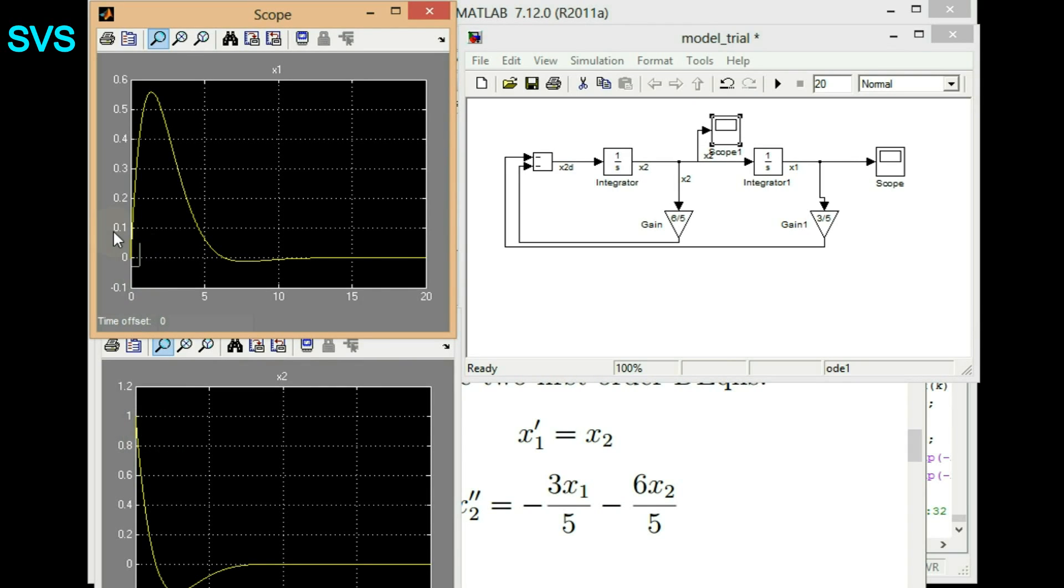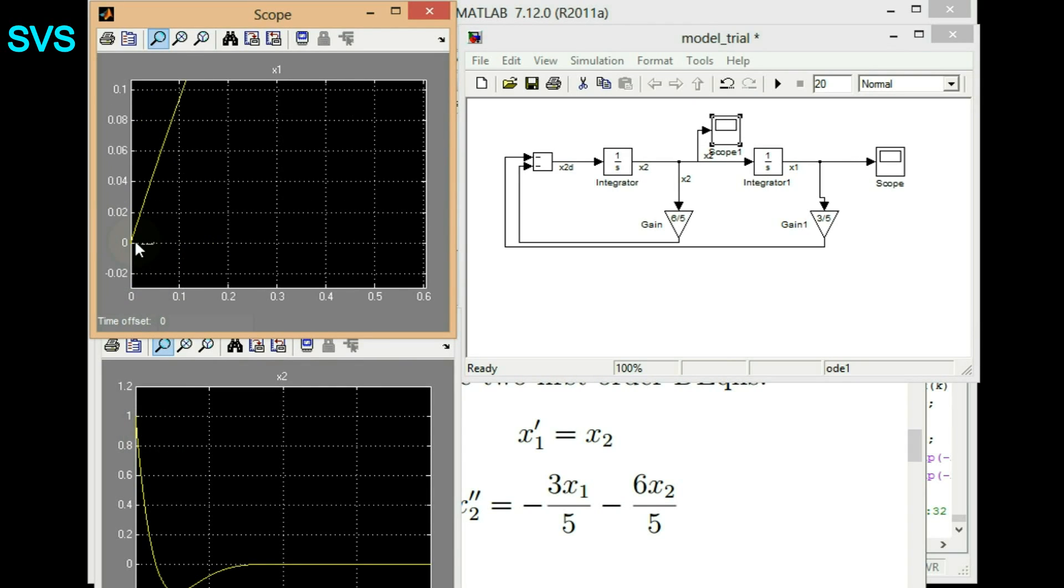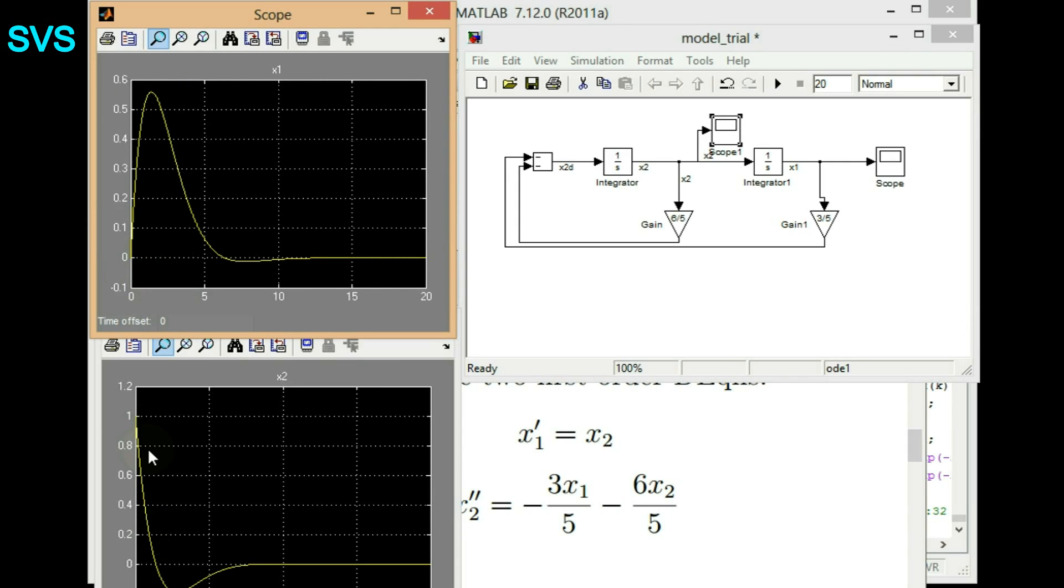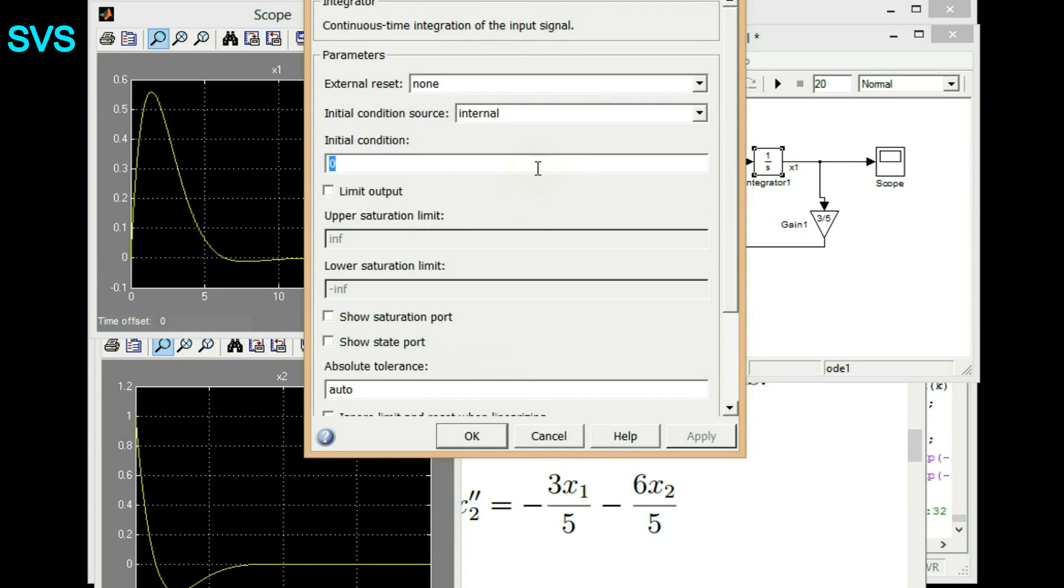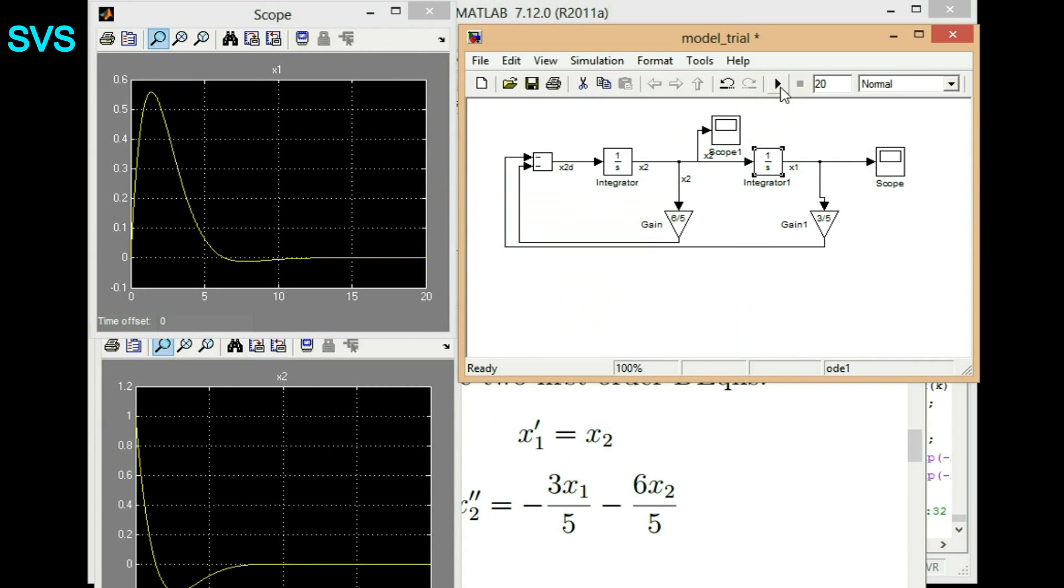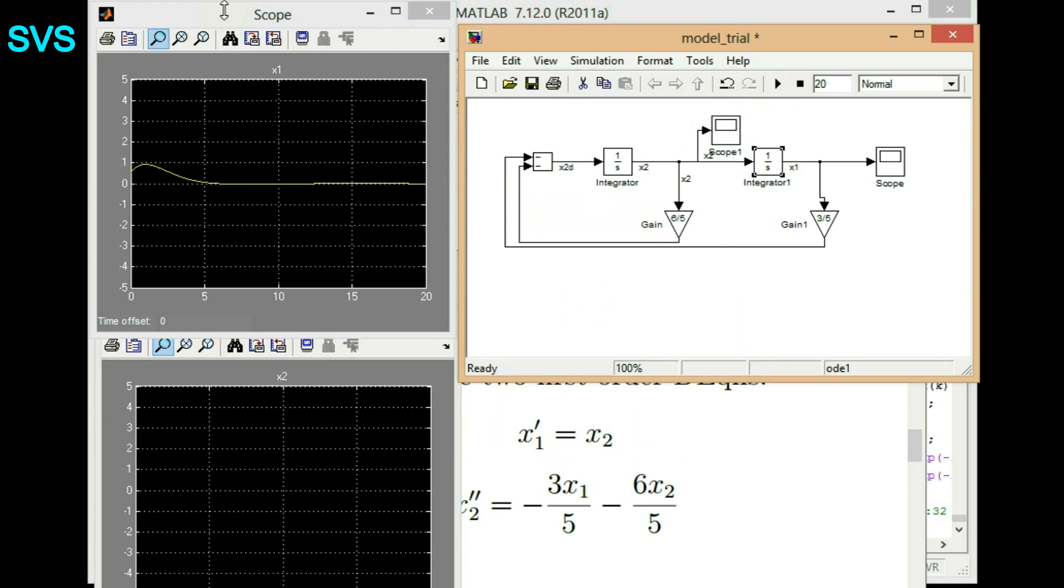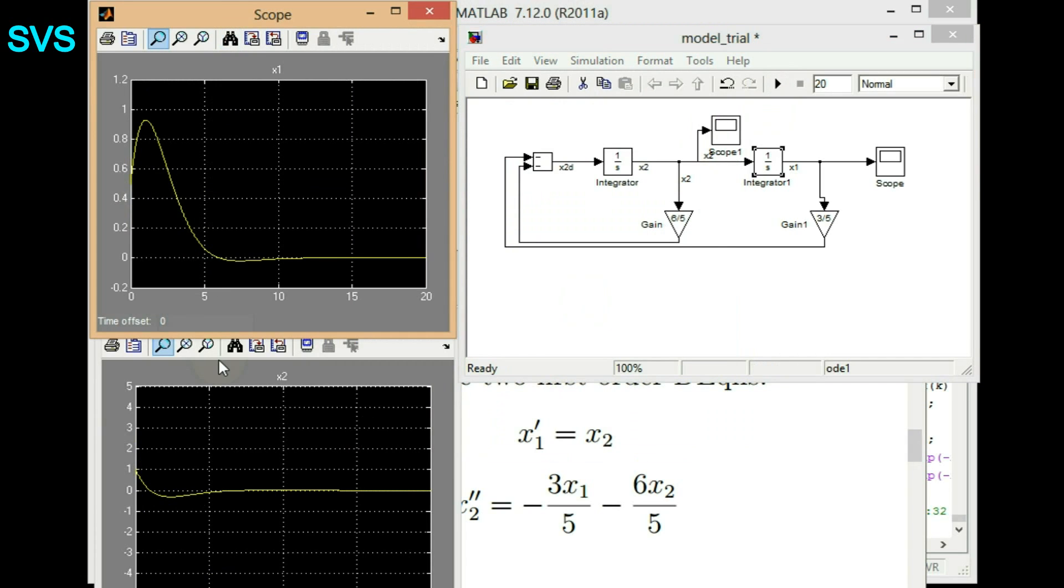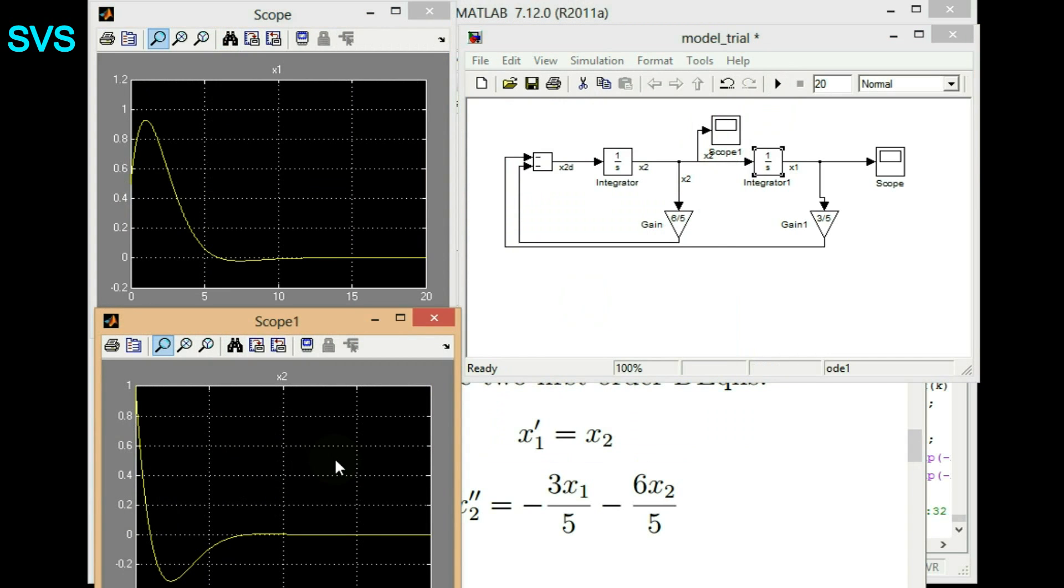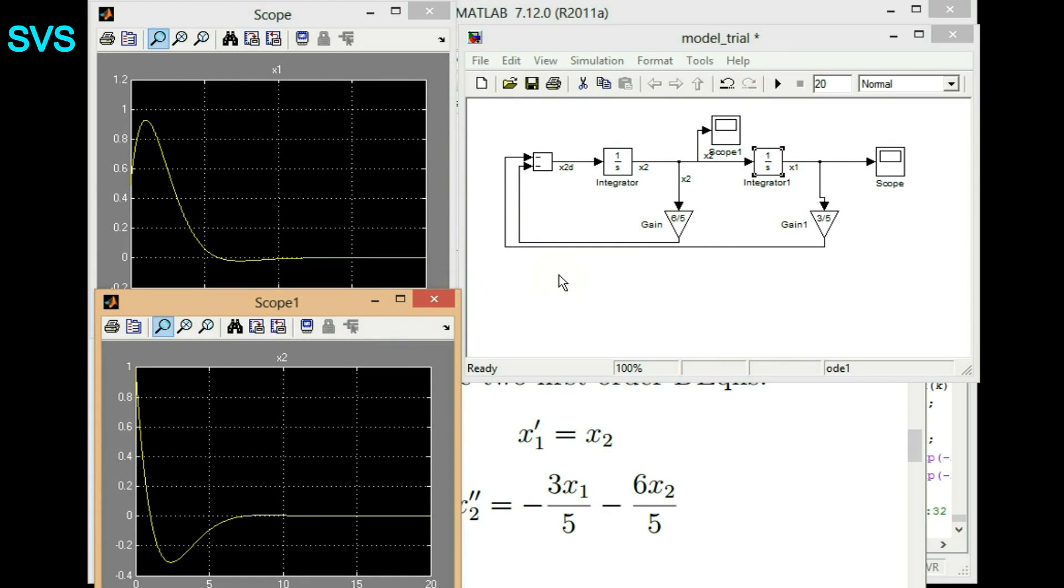So we can verify what is the initial value. So x1's initial value is 0 and x2's initial value is 1. So let's change x1's initial value and we'll verify whether our system solution is okay or not. There we go. So we are having initial values of 0.5 there in x1. And same goes with the x2 also.